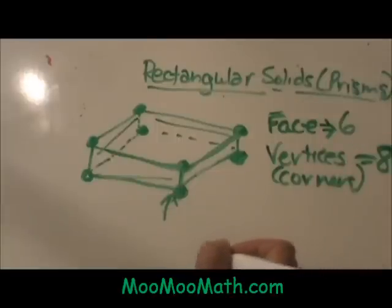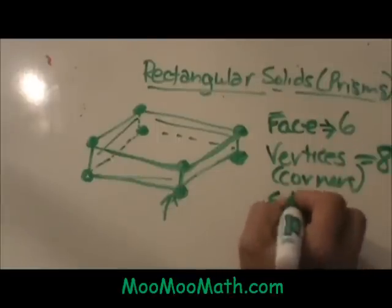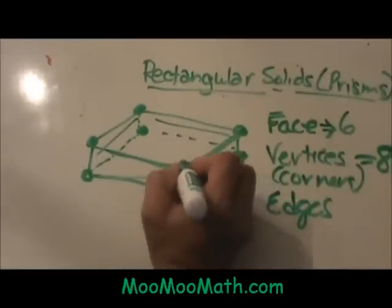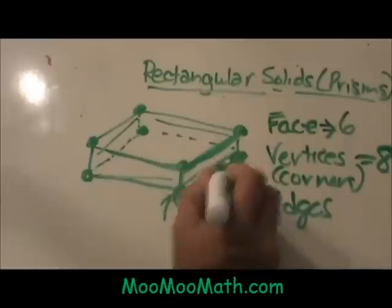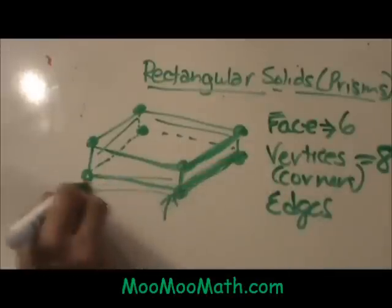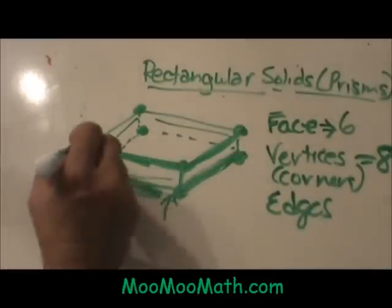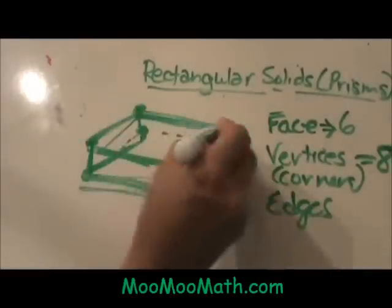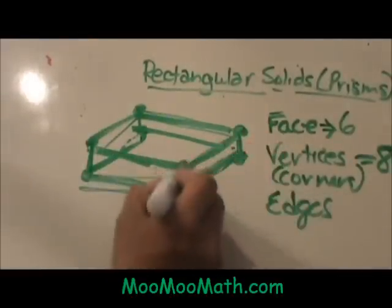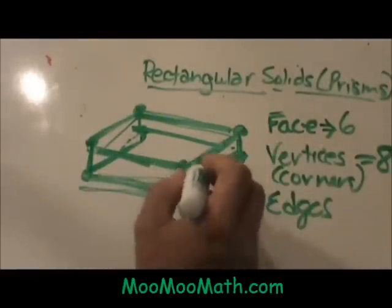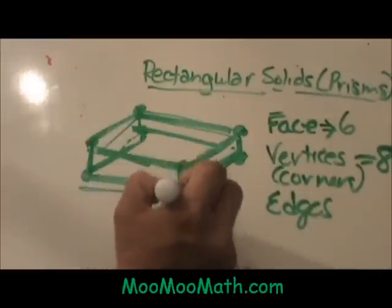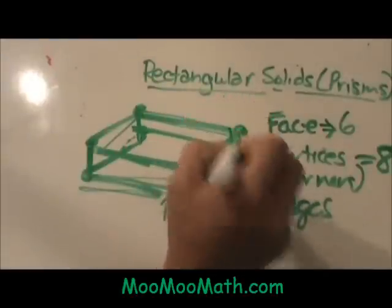Then how many edges does it have? Counting them all, one through twelve. So you go around the top and there are four. You go around the bottom and there are four. You go around the sides up and down and there are four.